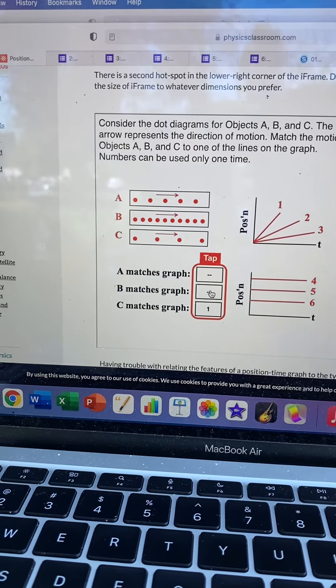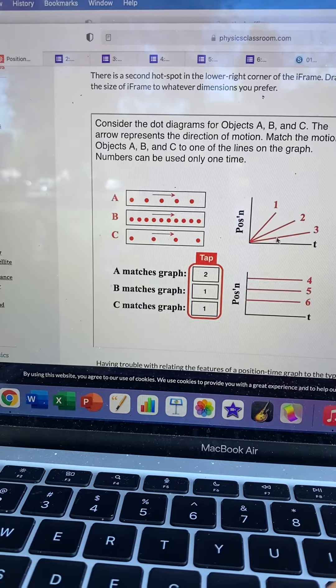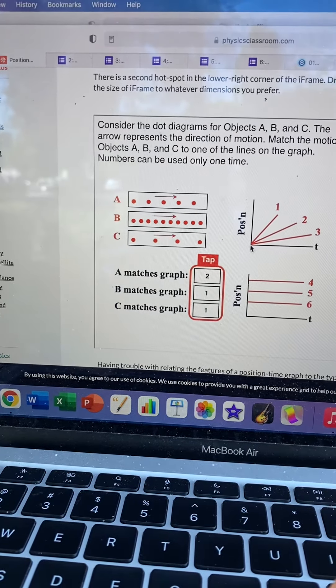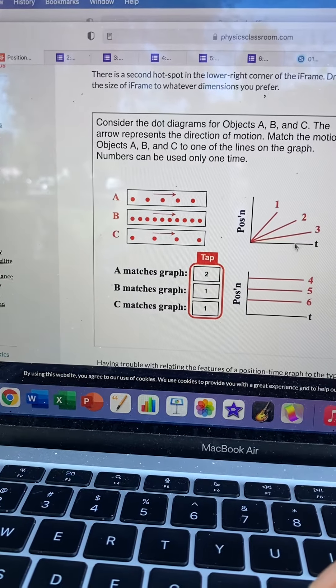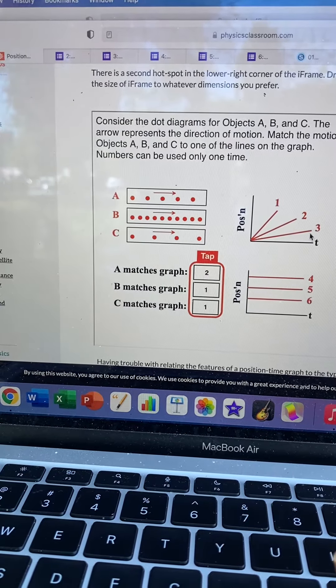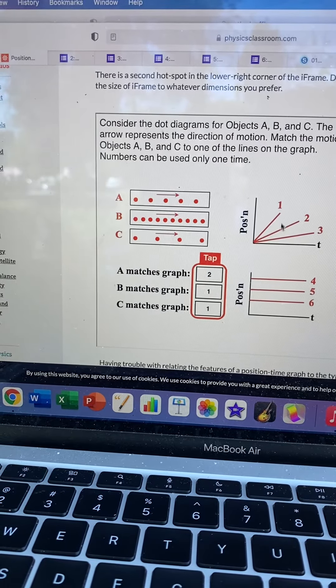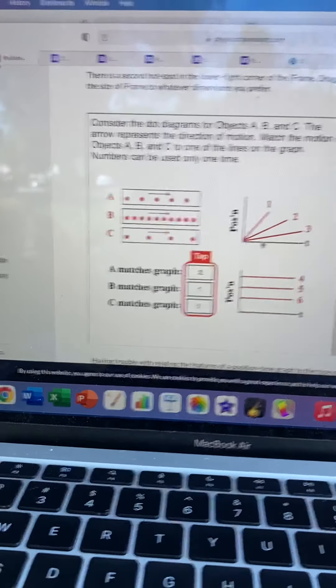Two would be the medium one. So that's going to be A is two. And three is going to be the slowest one. Another way to think about this is for three, the position is only changing a little bit, but it takes a long time for the position to just change this little bit. Versus for one, the position changes this much in just this little amount of time. That's fast. That's what fast is.